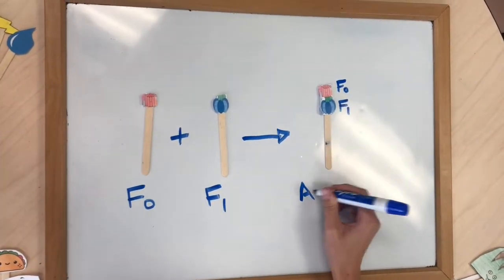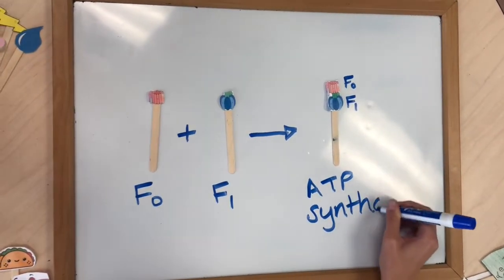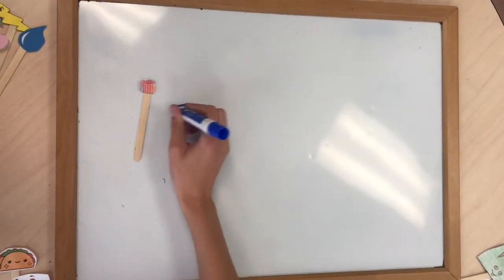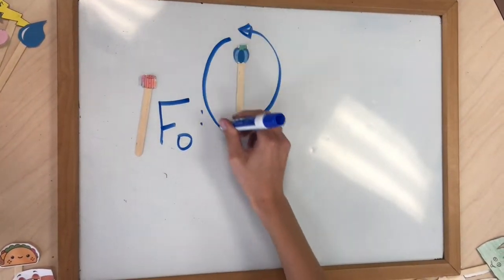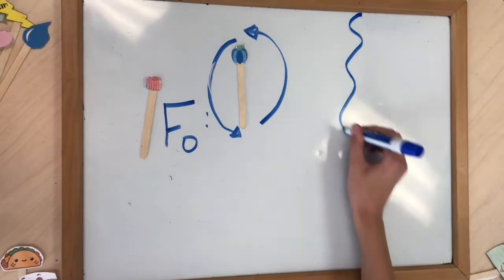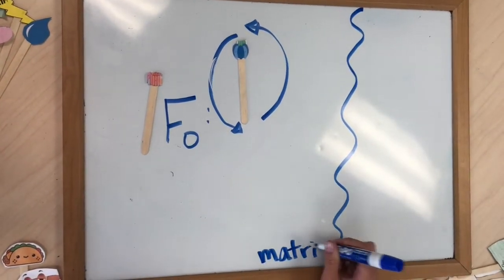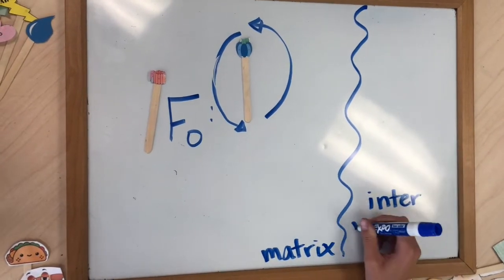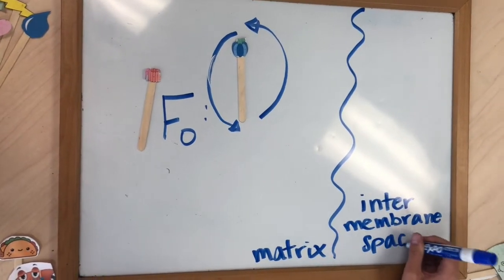Two of the most important are the F0 and the F1 domain. The first domain we are going to look at is F0. F0 causes rotation of F1. It also has the C10 ring, which is a proton acceptor and donor that is responsible for pumping protons across the membrane.